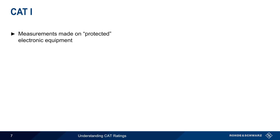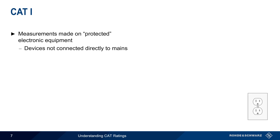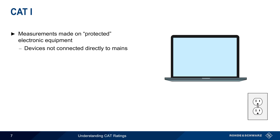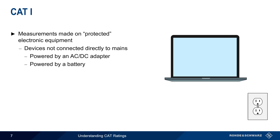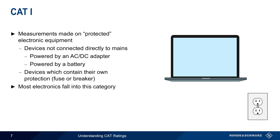CAT 1 applies to measurements on so-called protected electronic equipment. One meaning of protected is that the measured devices are not directly connected to mains. A common example would be a laptop that's powered by an AC to DC adapter or supply, and this would also apply to these same devices when they are running on battery power. Another way in which devices are protected is if they contain their own protection device, such as an internal fuse or breaker. CAT 1 generally applies to most electronic devices, and these devices typically pose a relatively low risk of danger during measurement.